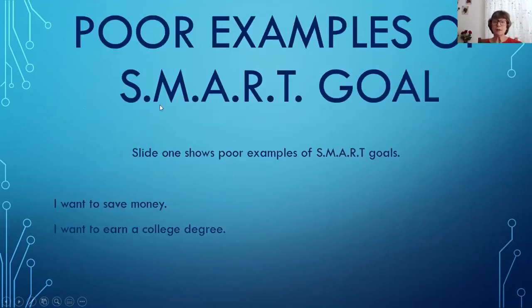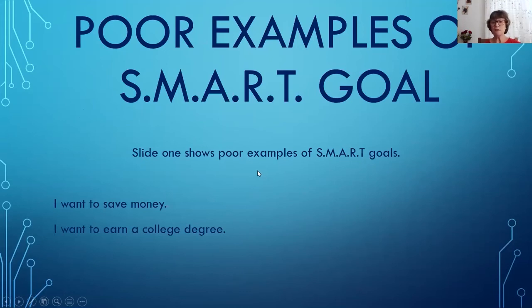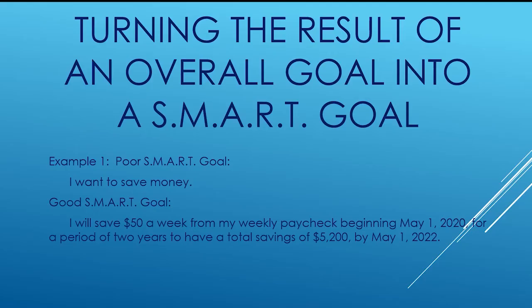Here's a poor example of a SMART goal, which we showed on slide one: 'I want to save money' or 'I want to earn a college degree.' Those are poor examples because they're not specific. You don't know how much you want to save, where you're getting the money, or how long you're going to be saving. So we're going to move on to turning the results of an overall goal into a SMART goal.